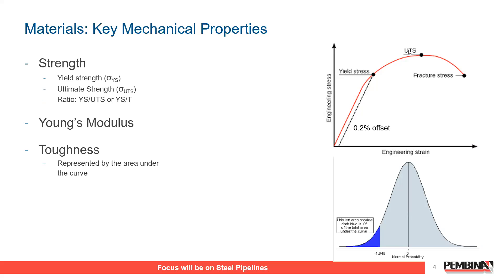There is a distribution of yield strength and pipe properties within each grade of pipe, and the grade given is the lower bound of that distribution. Between one joint and another, we can have different chemical compositions, different mechanical processing — one vintage to another. Modern pipelines: mills have been able to certify a specific joint of pipe to multiple grades — it meets the minimum, but what about the maximum? Getting stronger pipe than what you paid for sounds great. Hold that thought.